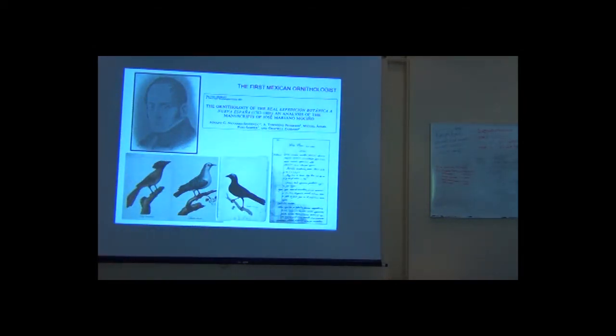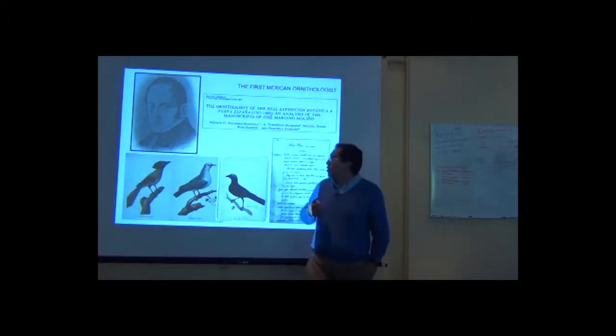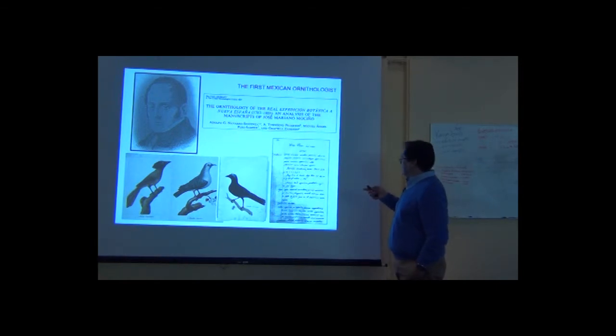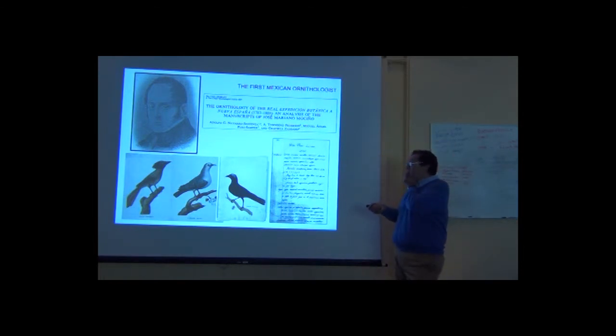This guy was Jose Mariano Mocinio. He was a naturalist that participated in an expedition during 1787 to 1803 called the Real Expedicion Española, the Royal Expedition to New Spain, that was led by Martin Sese, a botanist. It was basically a botanical exploring expedition, but Mocinio was in his heart an ornithologist. He was joined by a group of painters.